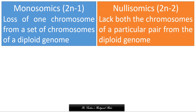Second, nullizomics, represented as 2n-2. This kind of aneuploidy arises when there is a lack of both chromosomes of a particular pair from the diploid genome. These arise by the fusion of n-1 and n-1 types of gametes, and usually nullizomics do not survive.